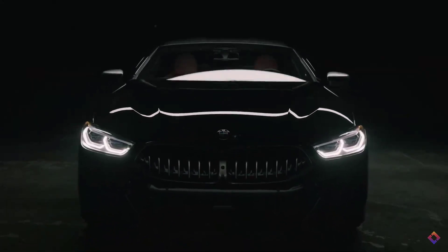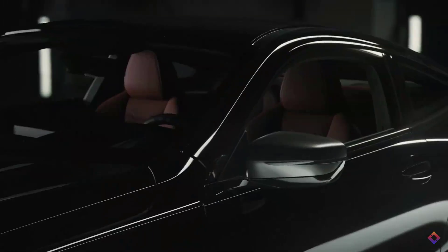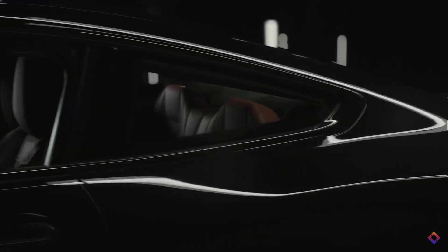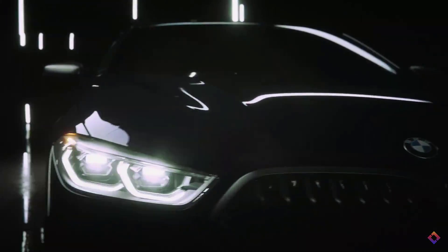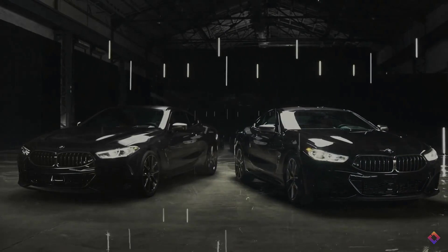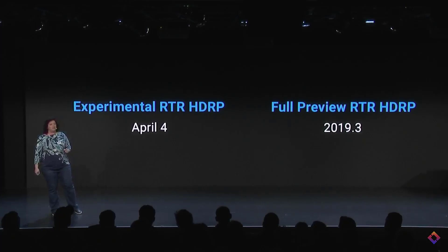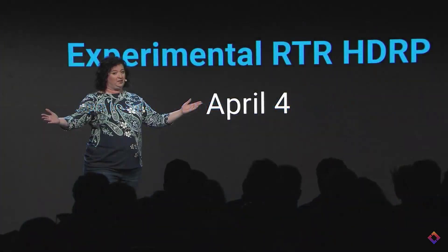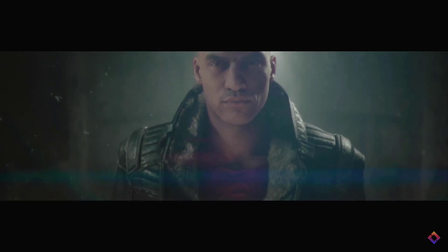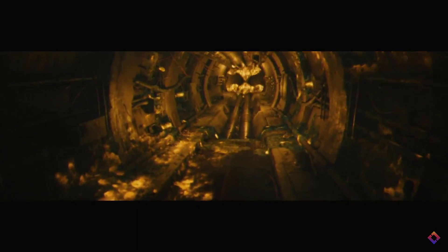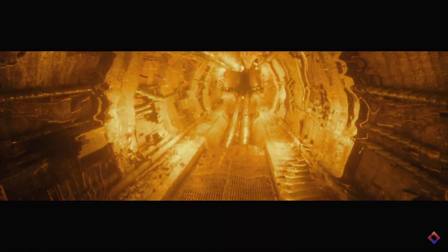Then they got into real-time ray tracing. This was a rehash of a demonstration done earlier at the NVIDIA GTC at GDC, where they showed a real-time rendering of BMWs intercut with real-life footage using RTX technology — I genuinely couldn't tell which car was which. They demonstrated the technology running in real-time on a Razer Blade laptop. Real-time ray tracing is starting to look pretty impressive. The HDRP real-time ray tracing source will be available on GitHub on April 4th, with the first full preview coming in Unity 2019.3. The Unity demo team finished things off with a new demo called 'The Heretic,' running in real-time on a Razer laptop — motion picture quality, honestly mind-blowing.